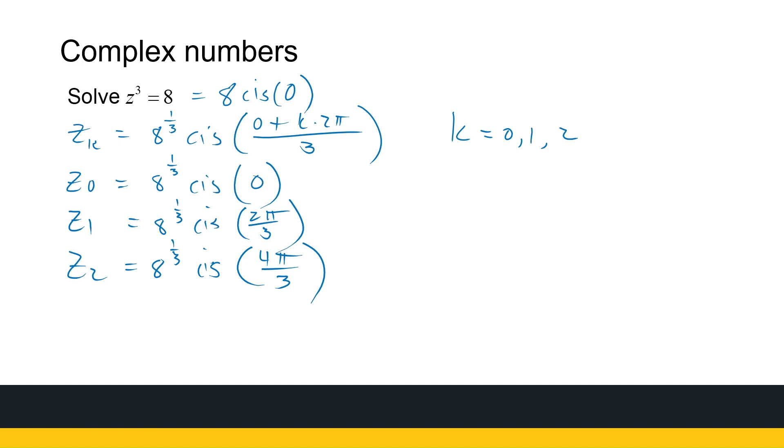And there we go. Those are the possible solutions. 8 to the power of 1 over 3 we know is 2, so that's 2 cis 0, which is on the real number line with the value 2. So that's the real solution that we got. But here are the additional complex numbers that are solutions to that equation. You can substitute it in and check that you get 8 out. So that's where we're going to stop with these roots of complex numbers.